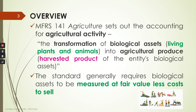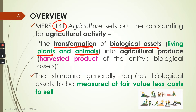MFRS 141 sets accounting for agricultural activity. Agricultural activity talks about transformation of biological assets — meaning how animals transform from the day they are born until they become mature animals, and from the day a plant is cultivated and planted until it bears its first fruit.